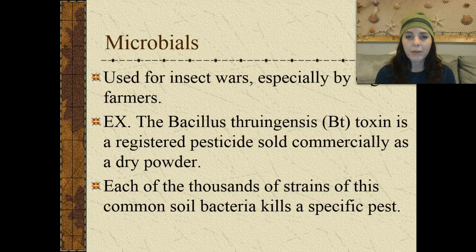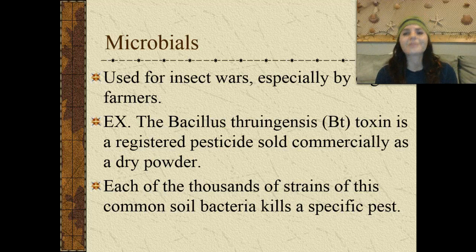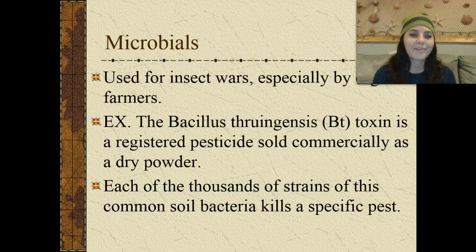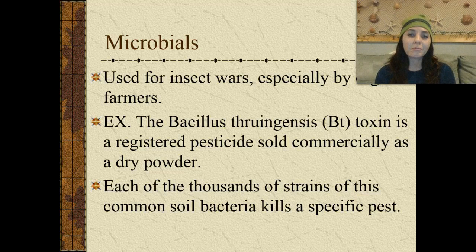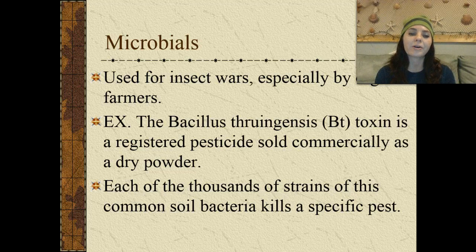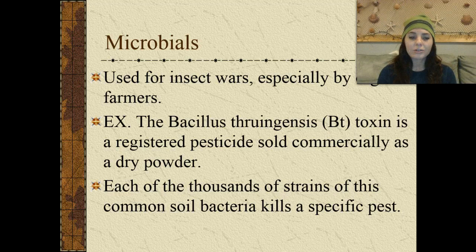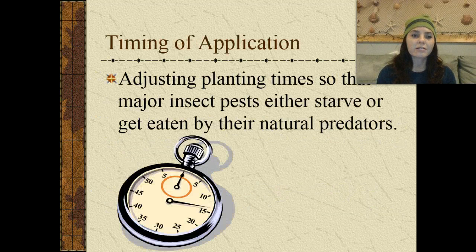We can use microbials, and these are used for insect control, especially by organic farmers. An example would be Bacillus thuringiensis, or the Bt toxin, which is a registered pesticide sold commercially as a dry powder. Each of the thousand strains of this common soil bacteria kills a specific pest.